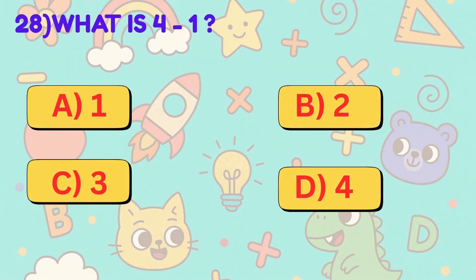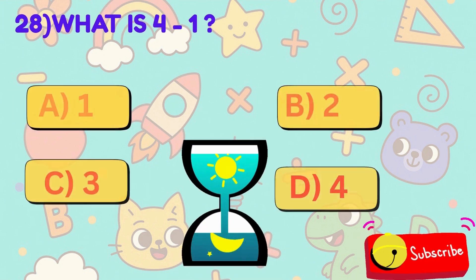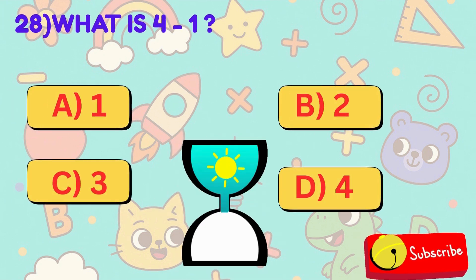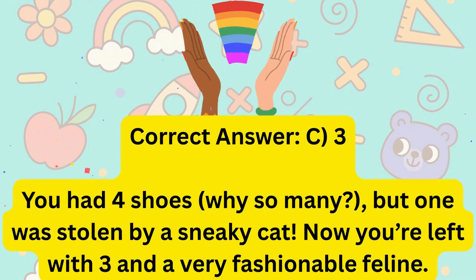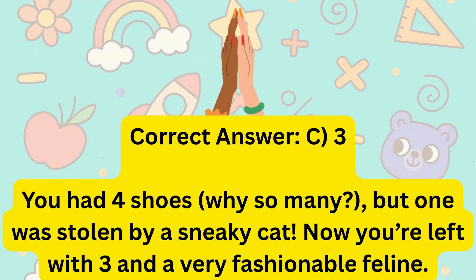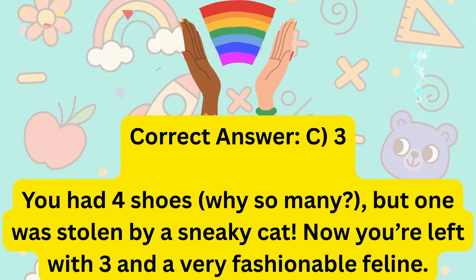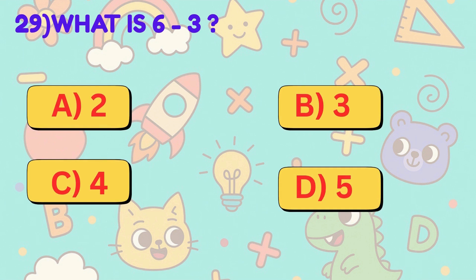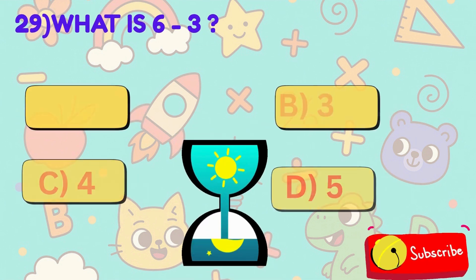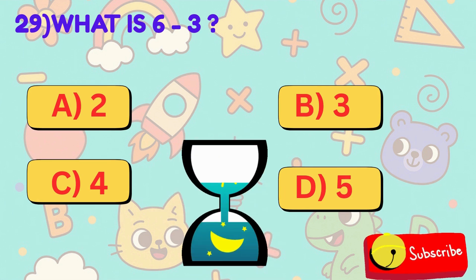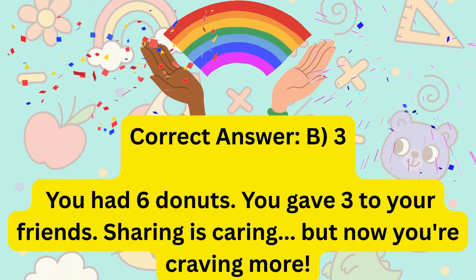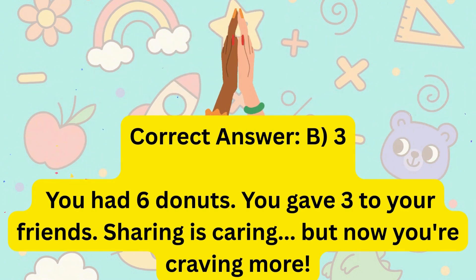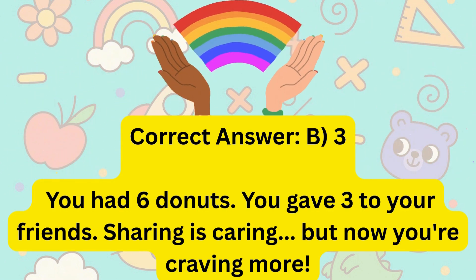28. What is 4 minus 1? 29. What is 6 minus 3? 30. Is it A, 2, B, 3, C, 4, or D, 5? Correct answer is B, 3. You had 6 donuts. You gave 3 to your friends. Sharing is caring, but now you're craving more.